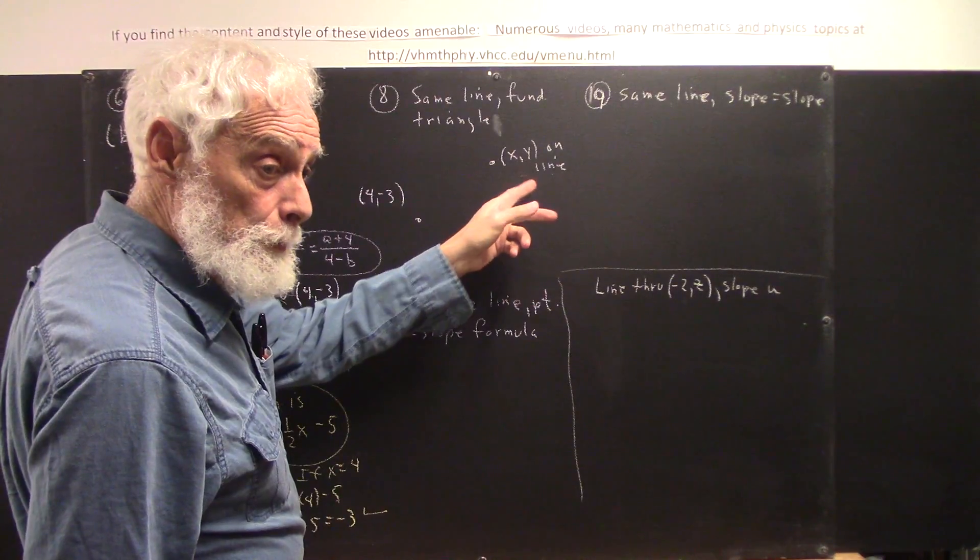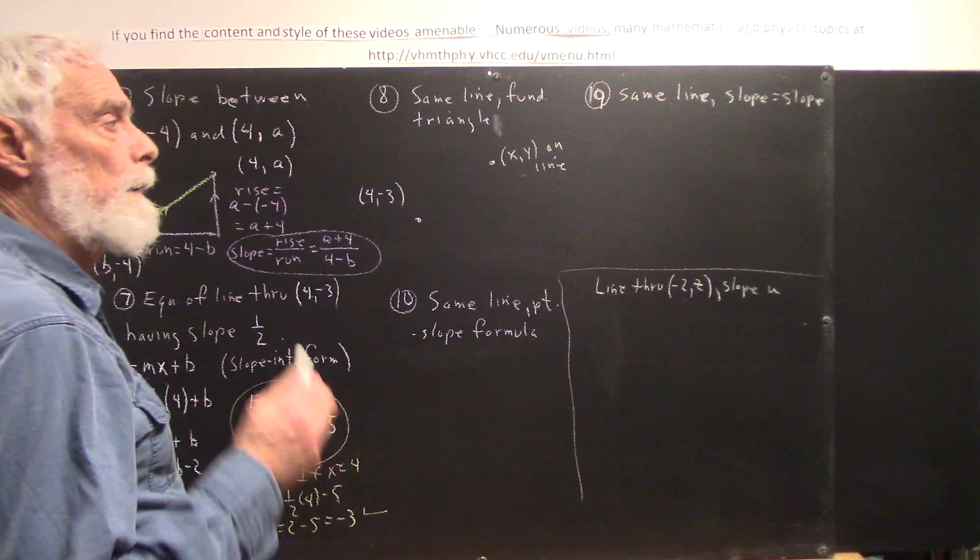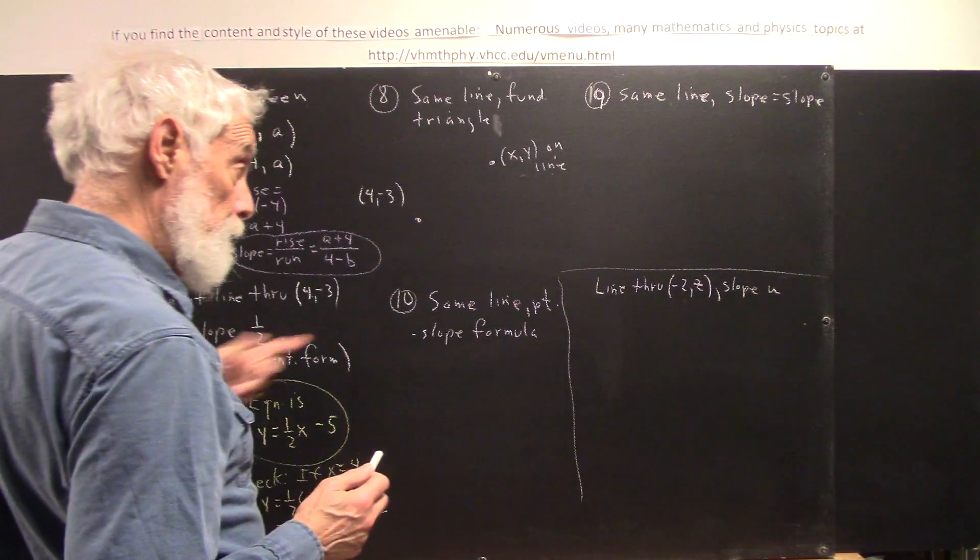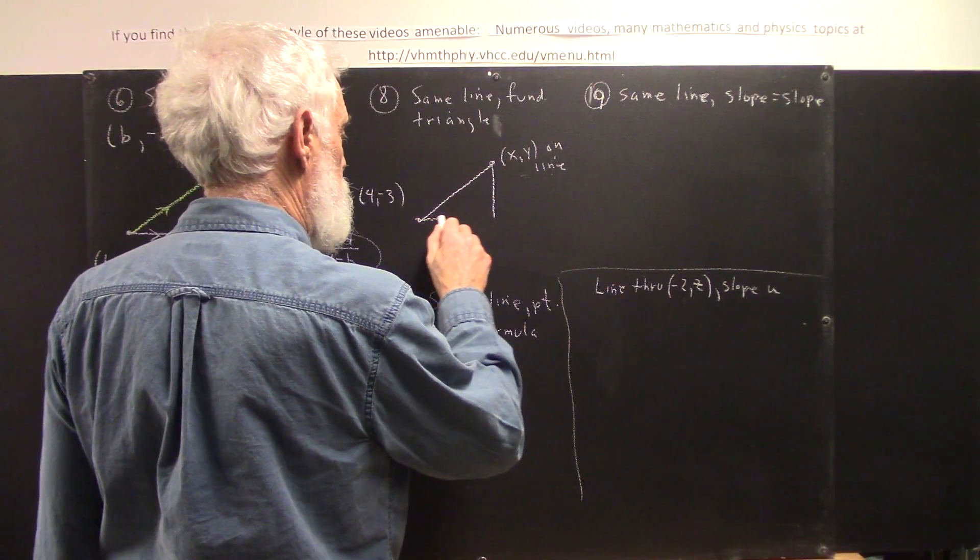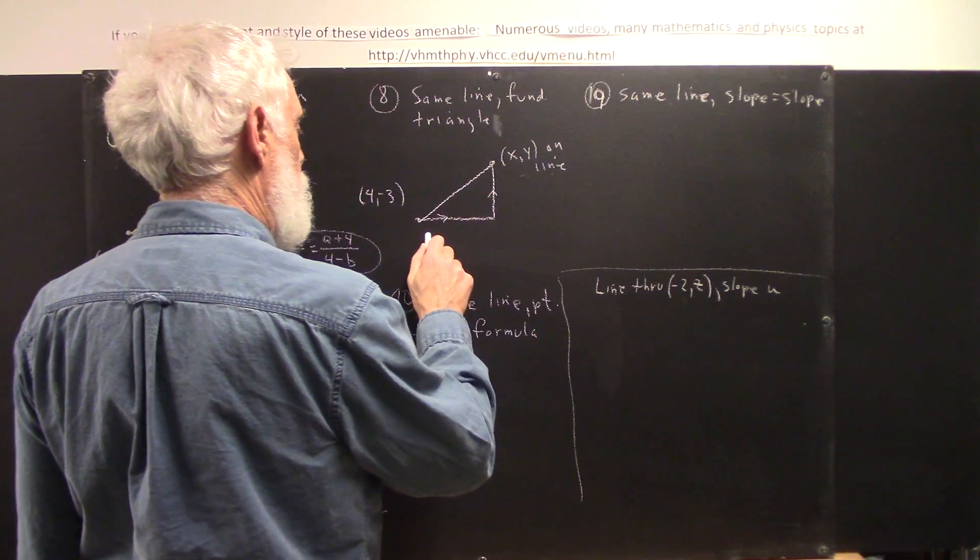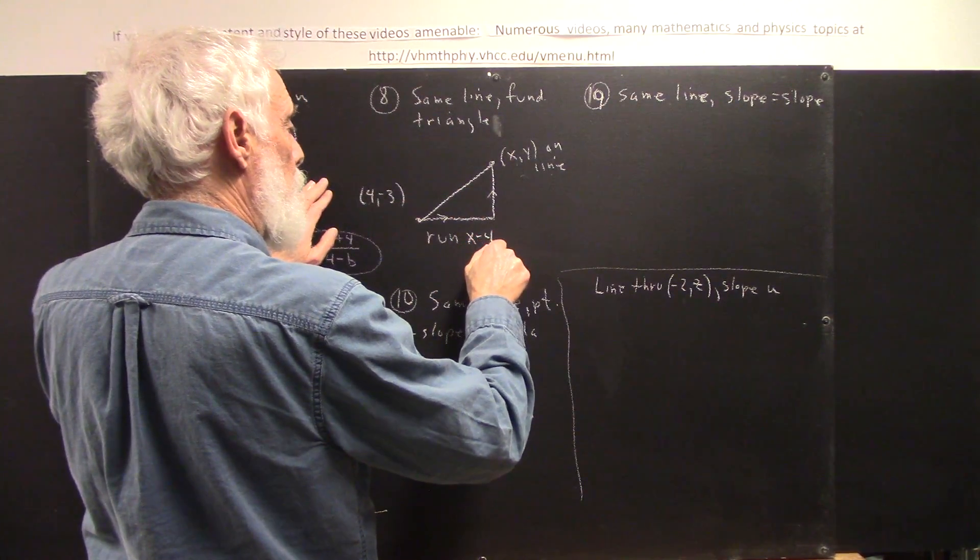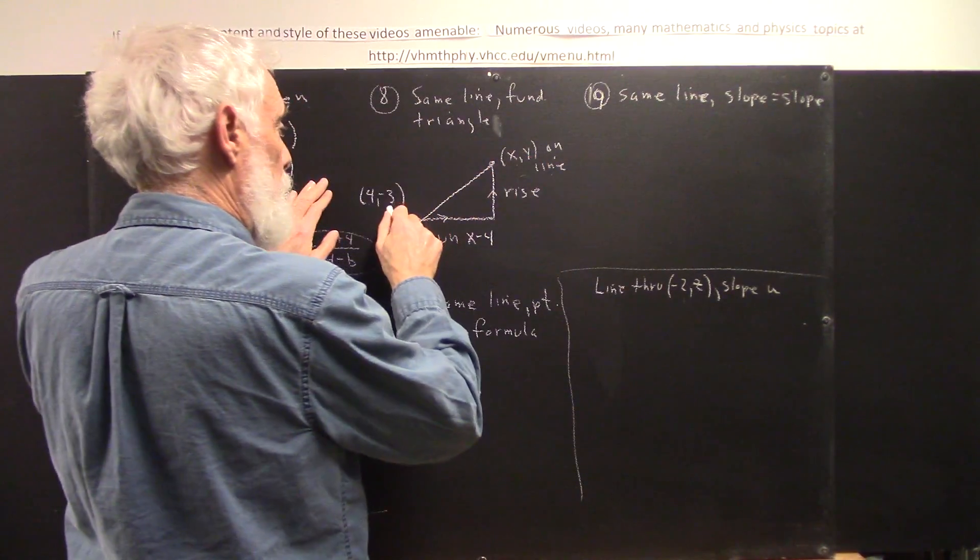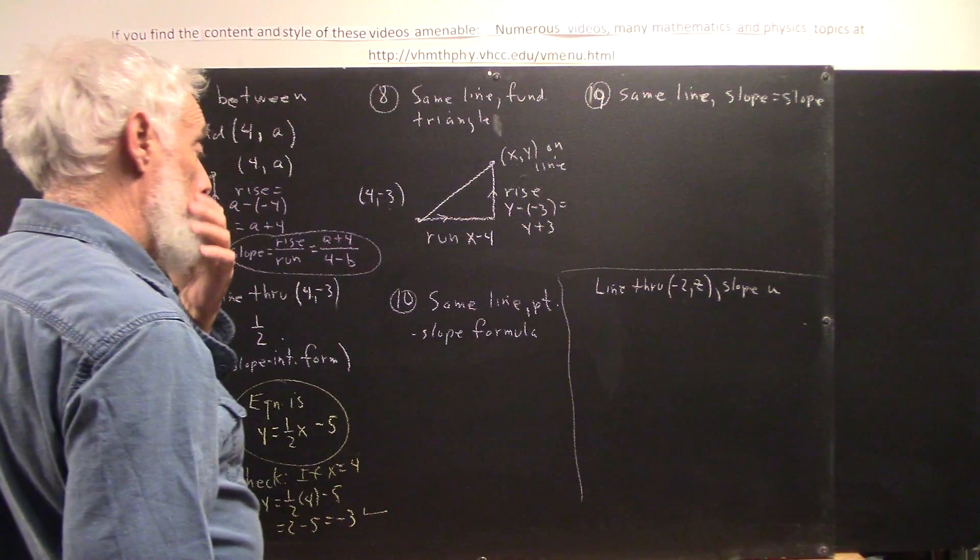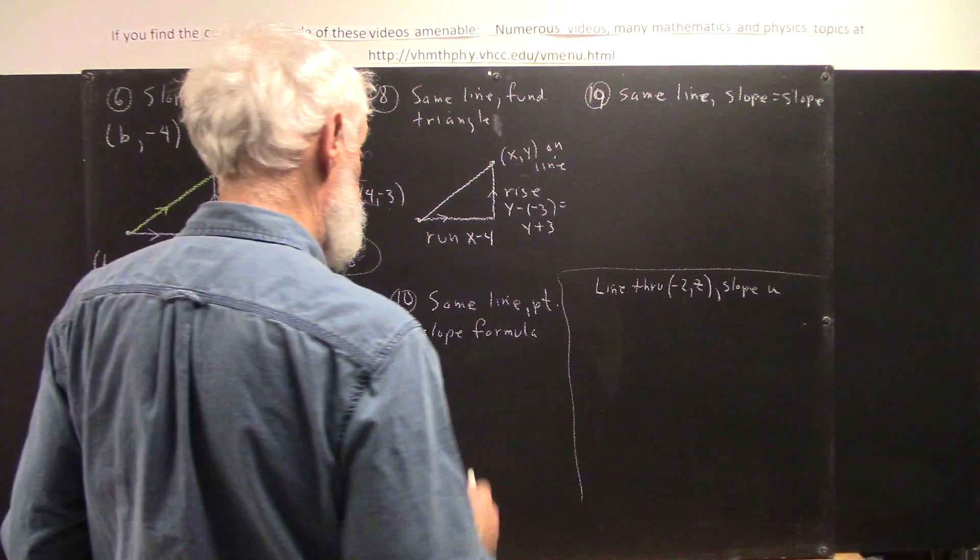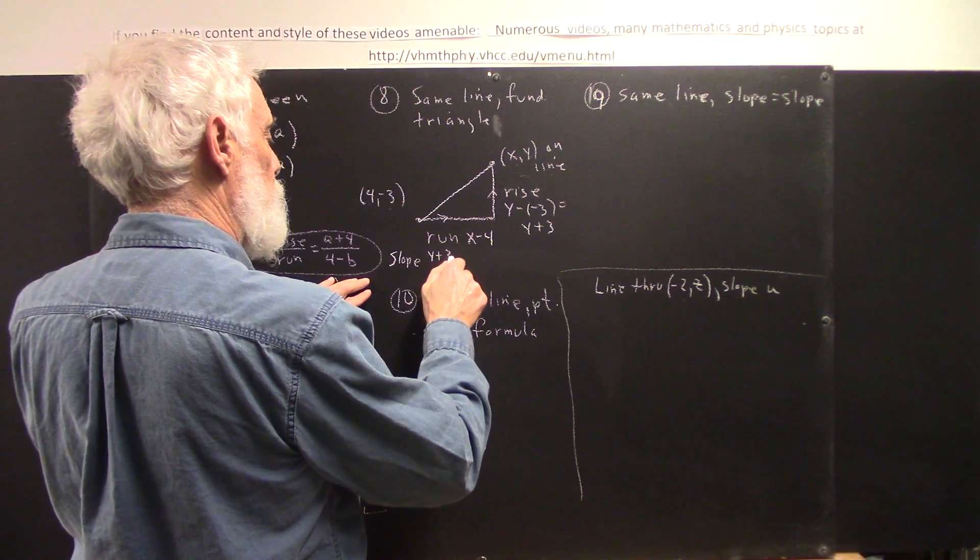So x, y is going to be any point on the line. I don't know if the slope is positive or negative. Well, actually the slope is 1 half, so that looks kind of about right. It doesn't really matter how we represent it. What matters is, now we've got two points and we can sketch our fundamental triangle. And if we move in this direction, our run is what? x minus 4. Our rise is what? Well, it's y minus negative 3, which is y plus 3.